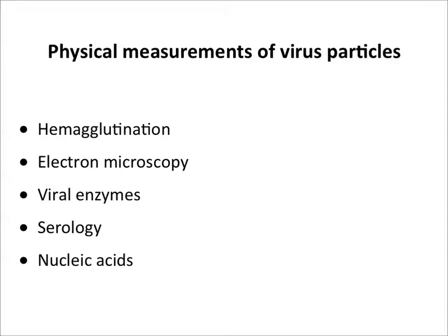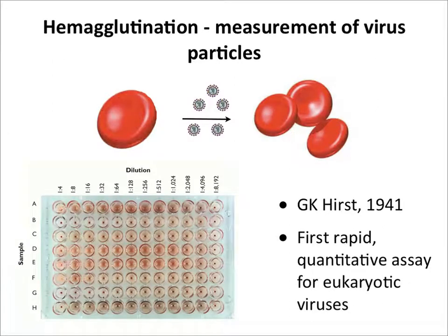That covers assays for measuring infectious particles. Now let's talk about measuring physical particles. There are several methods: hemagglutination, electron microscopy — which can actually count virus particles — enzyme activity assays, serology, and nucleic acid detection.